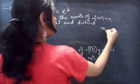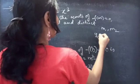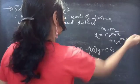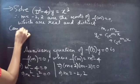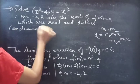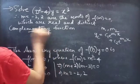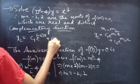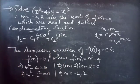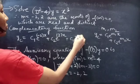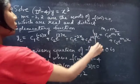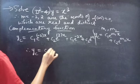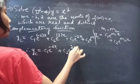When two roots m1 and m2 are real and distinct, our complementary function looks like: one constant times e to the power of the first root times x, plus another constant times e to the power of the second root times x. So yc equals c1 e to the power minus 2x plus c2 e to the power 2x.